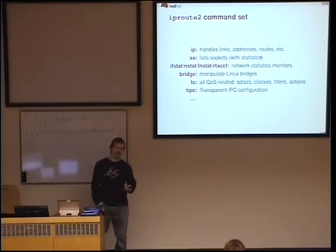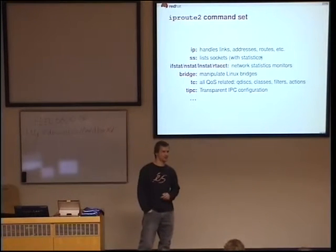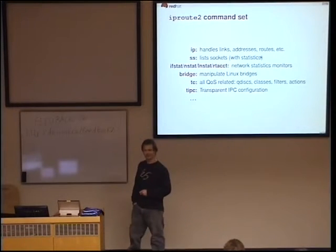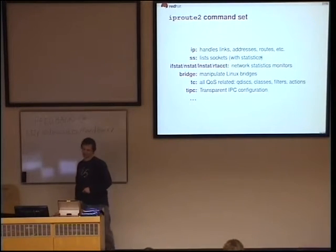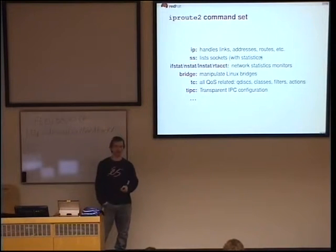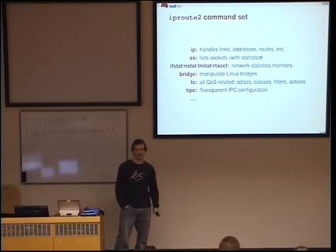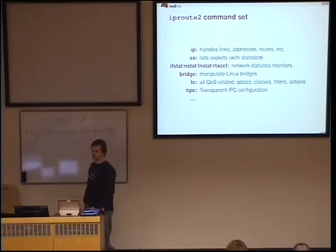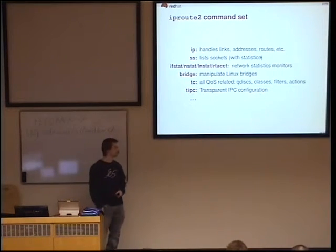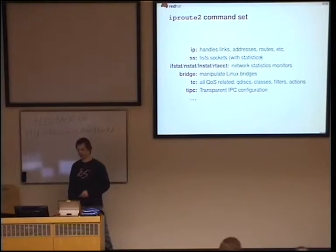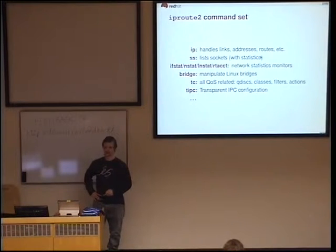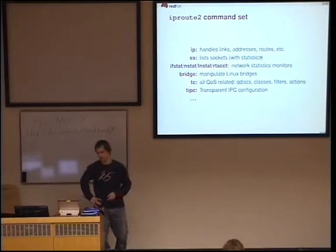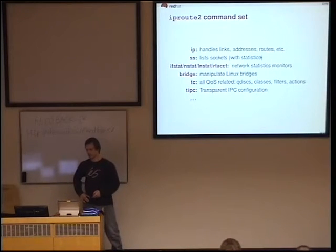There are a bunch of statistics utilities — obviously there weren't enough statistics already. We have some obscure utility which does things with bridges, but it's not exactly a replacement for bridge-utils. We have the famous TC, which everyone doing QoS has probably had to deal with. And there's some minor stuff, like a transparent IPC configuration utility I personally didn't use. And obviously there are many more which I have no idea if they are used at all or just dinosaurs from a former time. In this talk, I'll basically just cover the first three items, because the rest is beyond the scope.